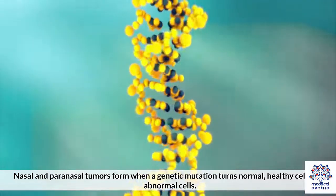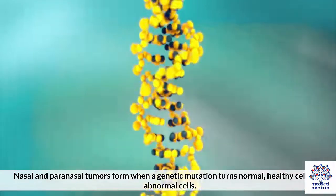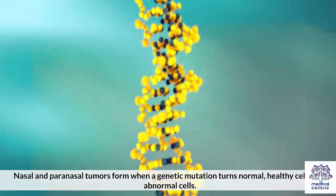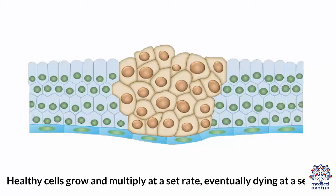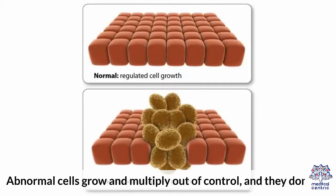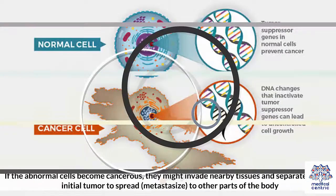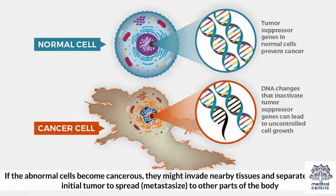Nasal and paranasal tumors form when a genetic mutation turns normal, healthy cells into abnormal cells. Healthy cells grow and multiply at a set rate, eventually dying at a set time. Abnormal cells grow and multiply out of control and they don't die. The accumulating abnormal cells form a mass or tumor. If the abnormal cells become cancerous, they might invade nearby tissues and separate from the initial tumor to spread, or metastasize, to other parts of the body.